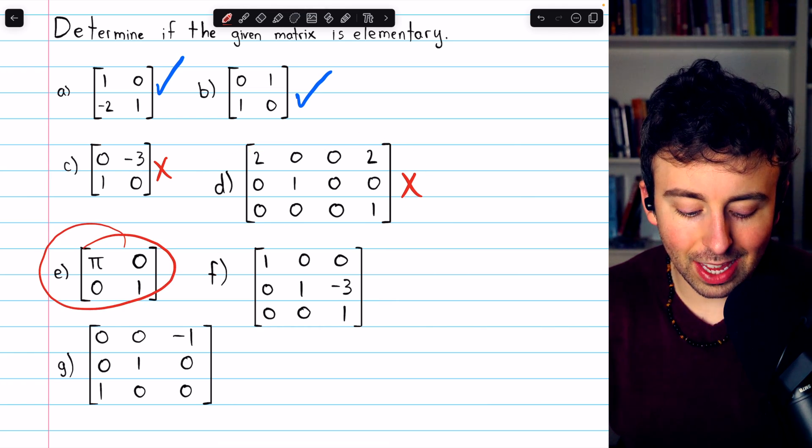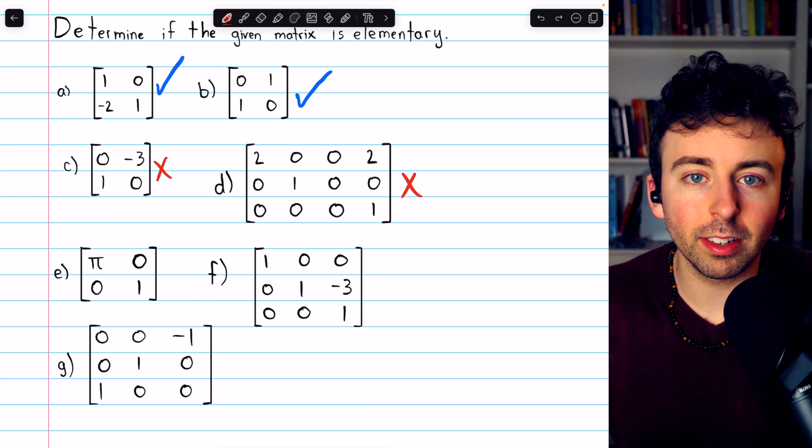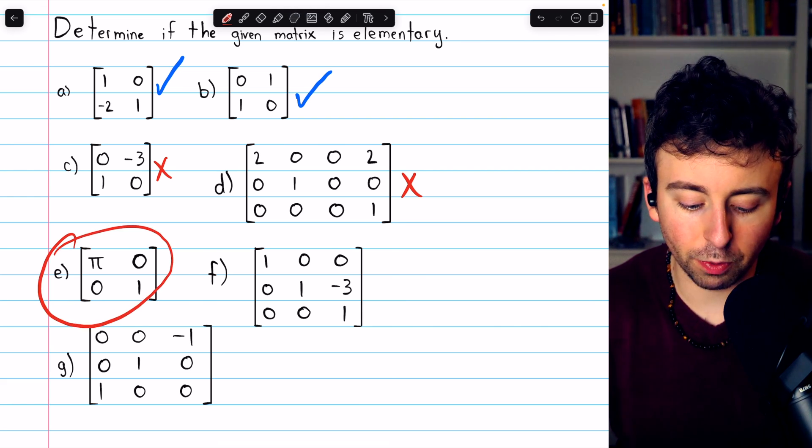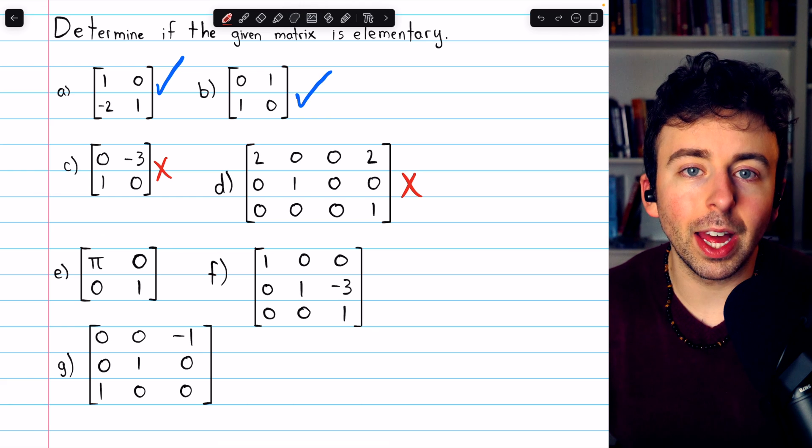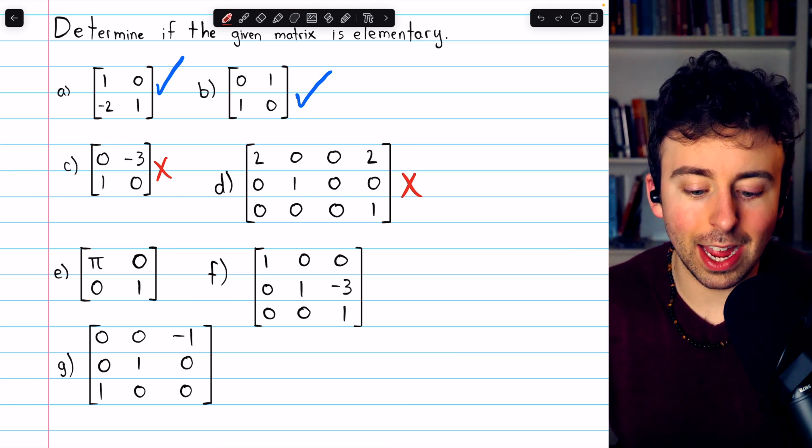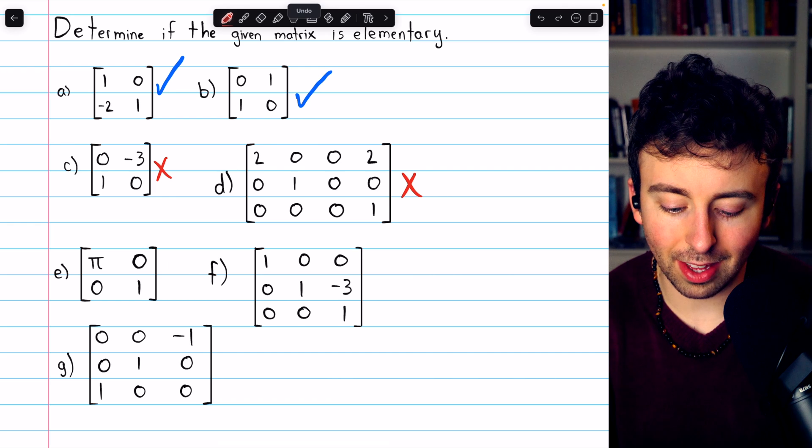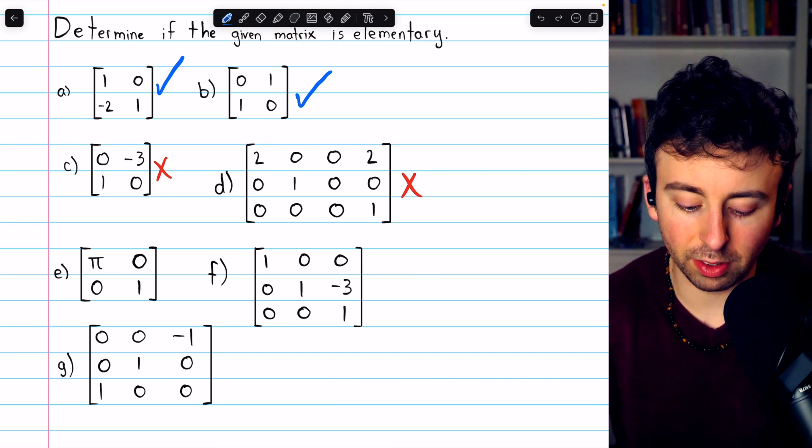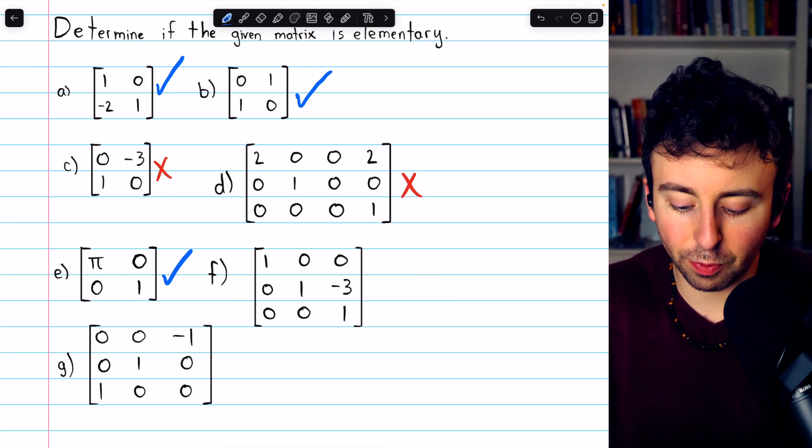Onto matrix E. This is an elementary matrix. We could obtain this matrix from the identity by just multiplying the first row by pi. That would produce this row 1. This one is elementary, just a multiplication by pi in the first row.